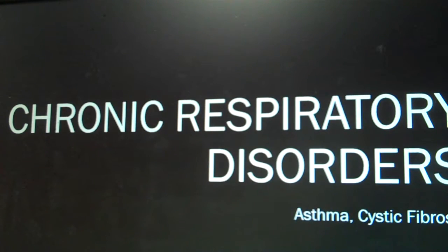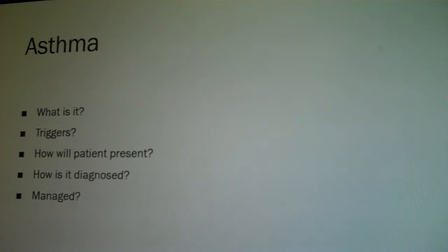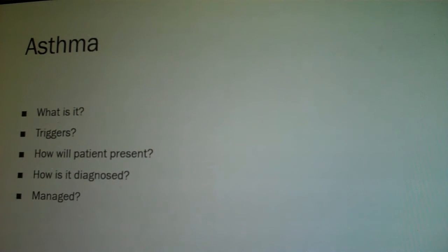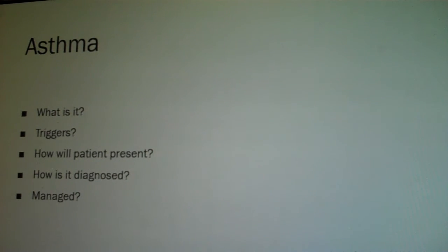Chronic respiratory disorders include asthma and cystic fibrosis. Asthma is a chronic inflammatory disorder that obstructs airflow. Acute episodes occur in response to a trigger — bronchoconstriction occurs and there is increased mucus production. Triggers include allergens such as pollen, animal dander, household dust, environmental pollutants, tobacco smoke, chemical agents, respiratory infections, exercise, emotional stress, and certain medications. The patient will present with wheezing, coughing, poor oxygen saturation, breathlessness, chest tightness, tachypnea, tachycardia, mucus production, and sometimes apprehension and anxiety.